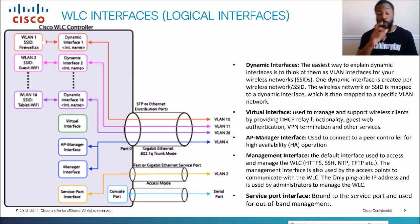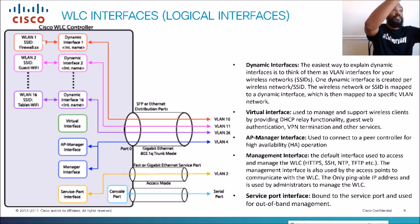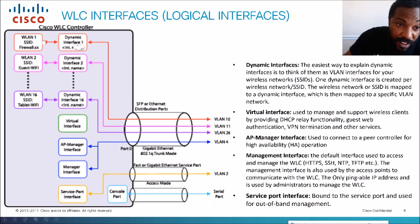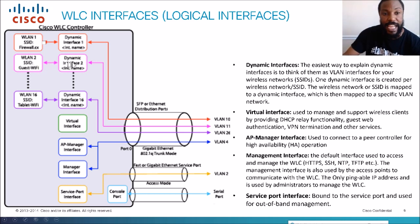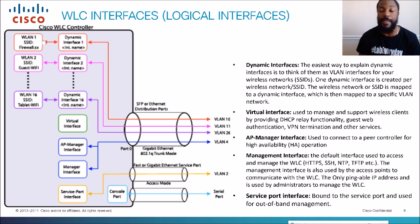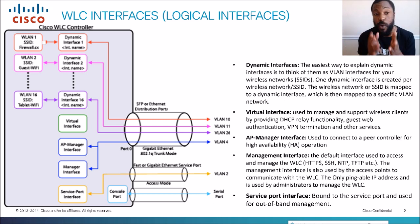One dynamic interface is created per SSID. For example, WLAN 1 SSID 'FirewallCX' is tied to dynamic interface number one. WLAN 2, the guest Wi-Fi, is tied to dynamic interface two, and so on. Each dynamic interface is tied to an SSID — remember that.